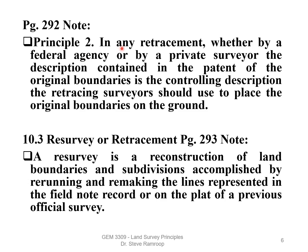Principle 2, page 287: In any retracement, whether by a federal agency or private surveyor, the description contained in the patent of the original boundaries is the controlling description. The retracing surveyor should use it to place the original boundaries on the ground. Whatever is on the original patent, the retracing surveyor needs to identify that information and locate where the original boundaries are on the ground.